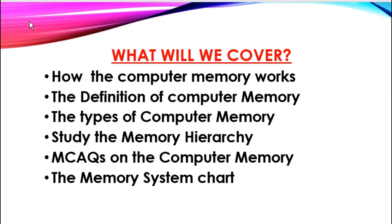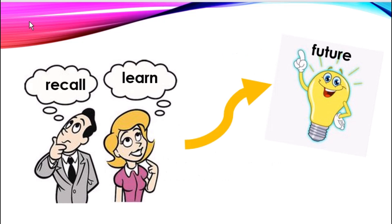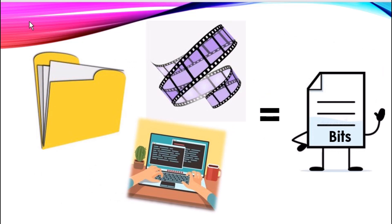In various ways, our memories define what kind of people we are. They help us recall the past, learn from it, and plan ourselves a brighter future. Computers tend to behave the same way as people, and their memory plays the same role as what happens in human beings. For example, be it a 100-page document, a 24-episode movie series, or even a single line of code or instruction.